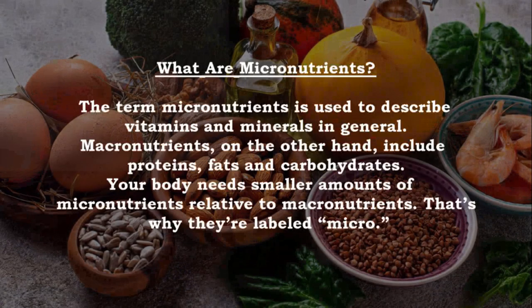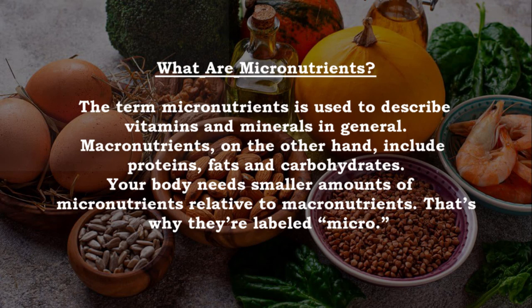What are micronutrients? The term micronutrients is used to describe vitamins and minerals. Macronutrients, on the other hand, include proteins, fats, and carbohydrates. Your body needs smaller amounts of micronutrients relative to macronutrients — that's why they're labeled micro.